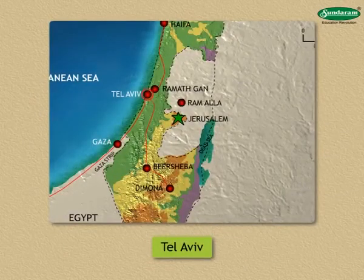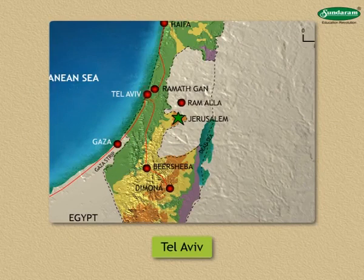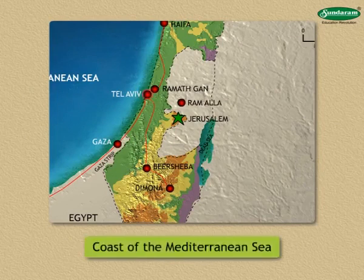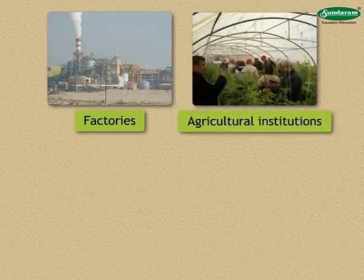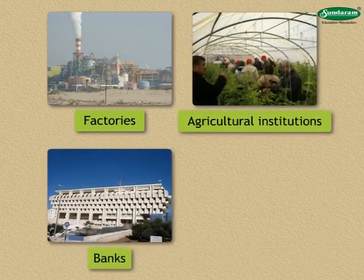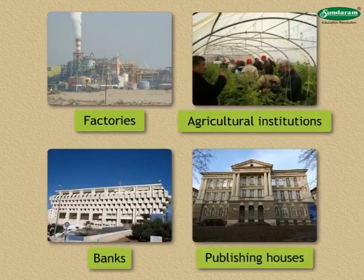Tel Aviv is a modern city situated on the coast of the Mediterranean Sea. This is the main trading center. There are many factories, agricultural institutions, banks, and publishing houses in this city.